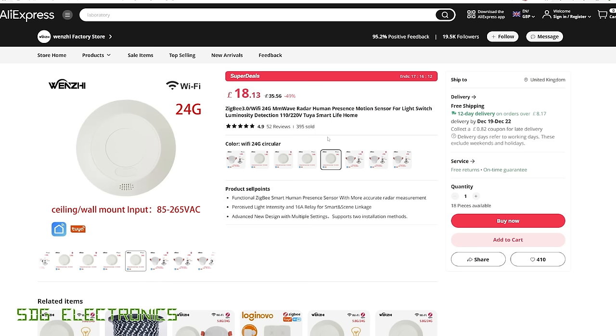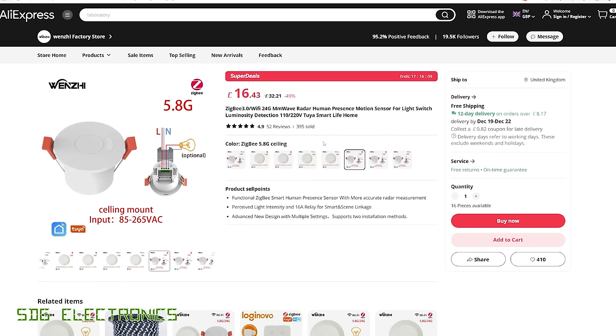Then you get the choice of whether you want the 5.8 gigahertz radar or the 24 gigahertz radar. The 24 gigahertz should be a little bit more sensitive to very small movements, but the range is potentially more reduced. I've selected the 24 primarily because I want it to be particularly sensitive. If I install this in the bathroom and someone's in there, I don't want the lights turning off all the time.